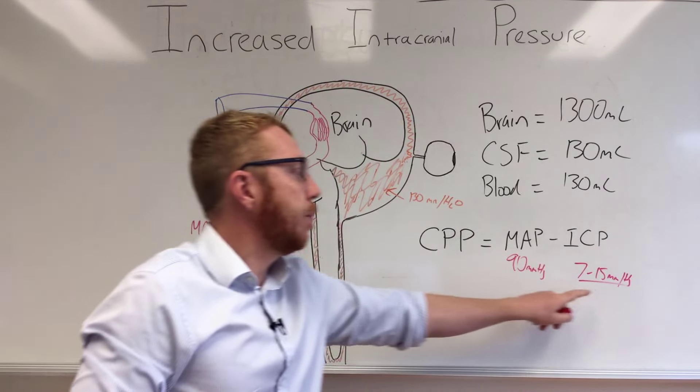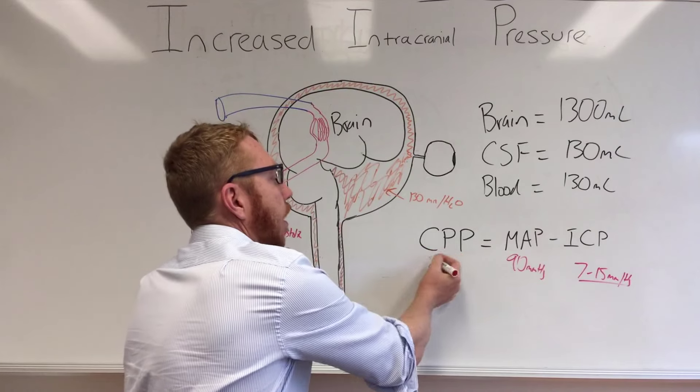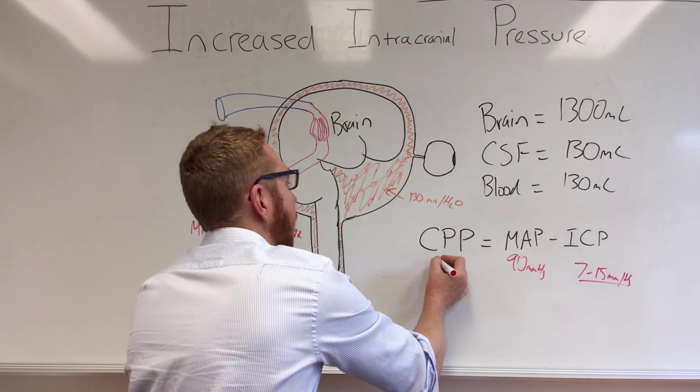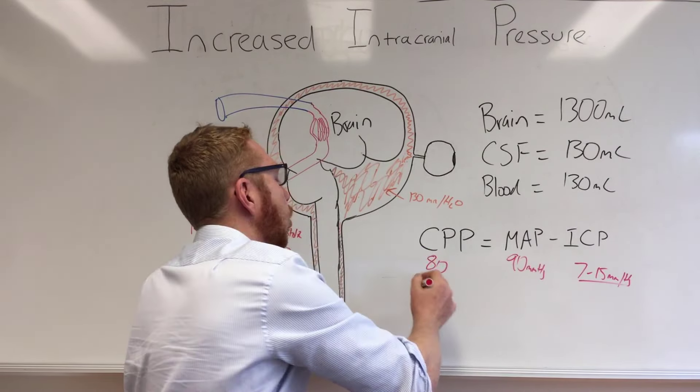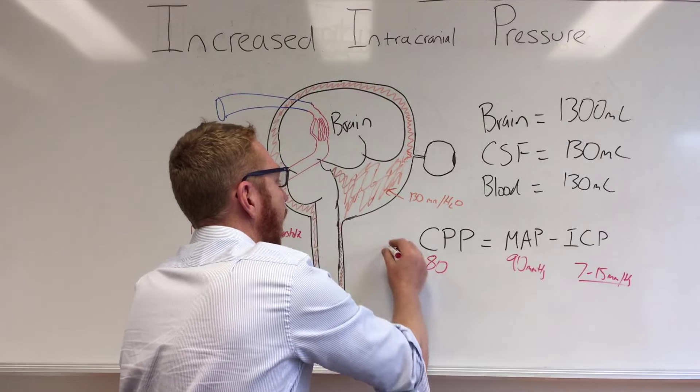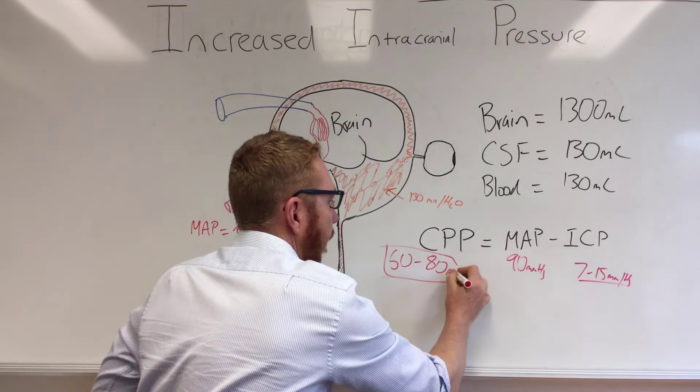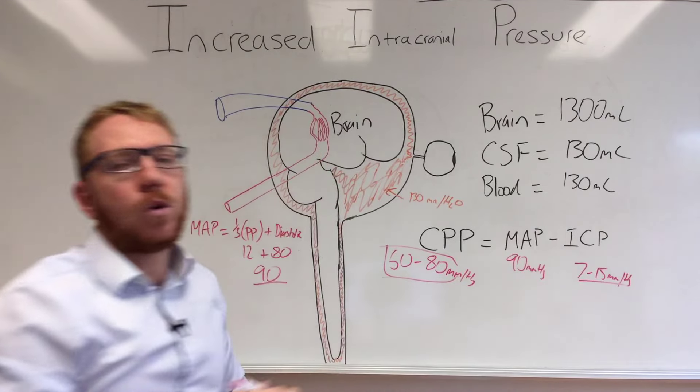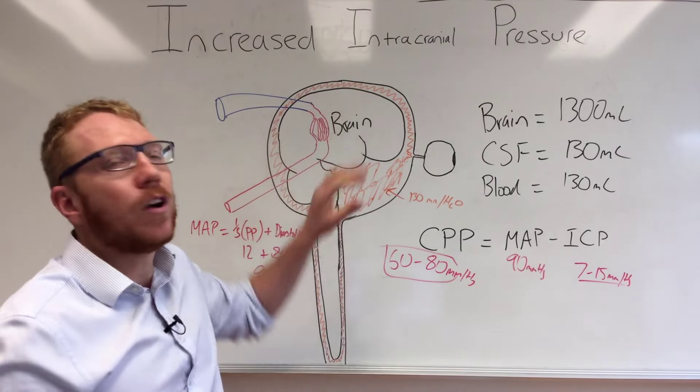Let's just say 10. So that 90 minus 10 is going to give you a cerebral perfusion pressure of let's say 80. And the normal range is about 60 to 80, that is millimeters of mercury. That is what's required to perfuse your head.